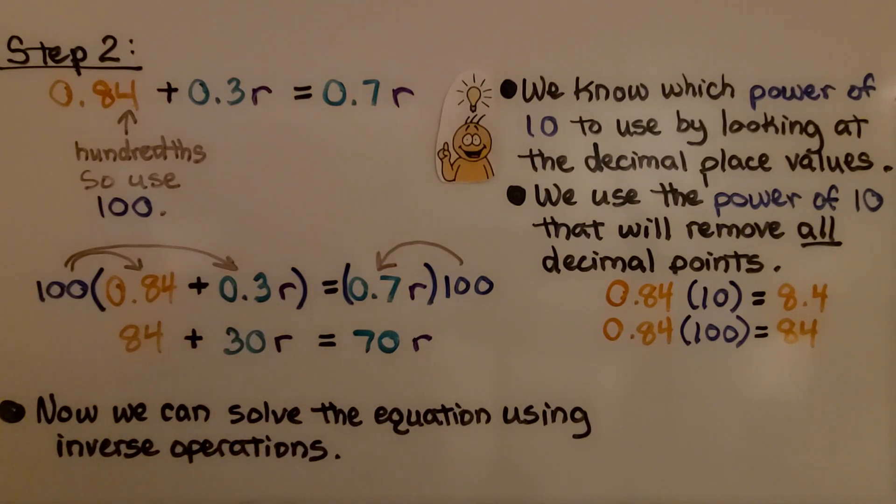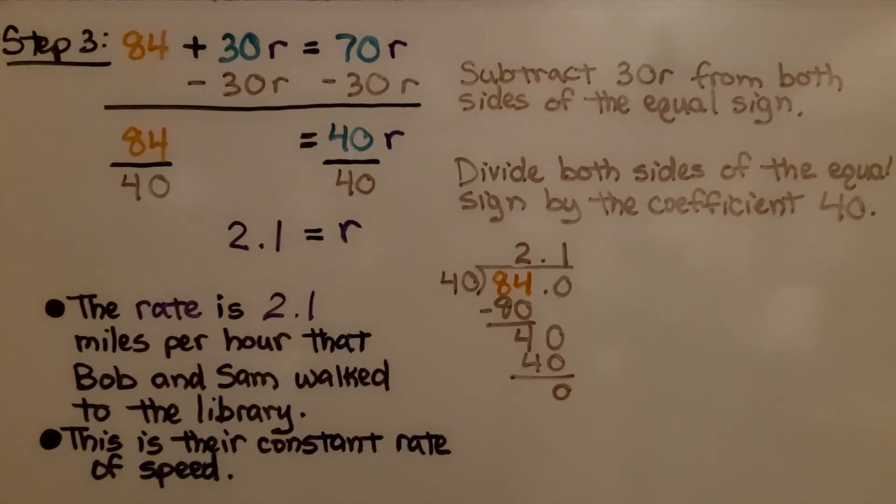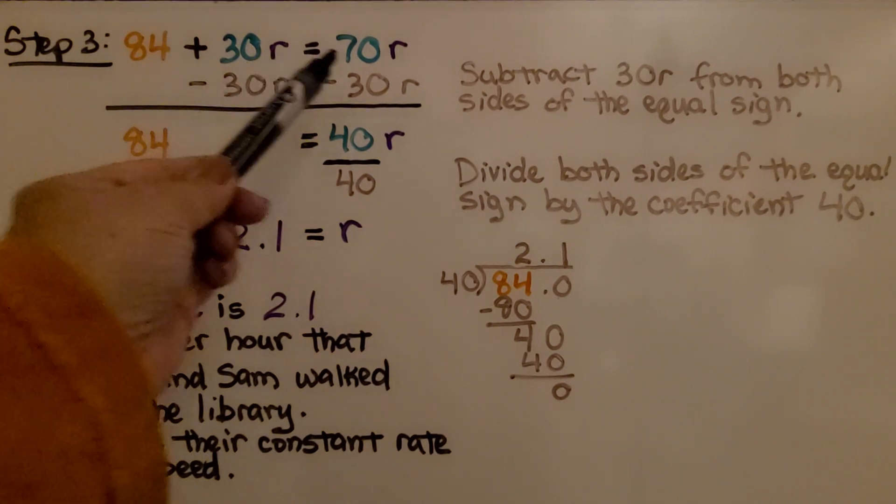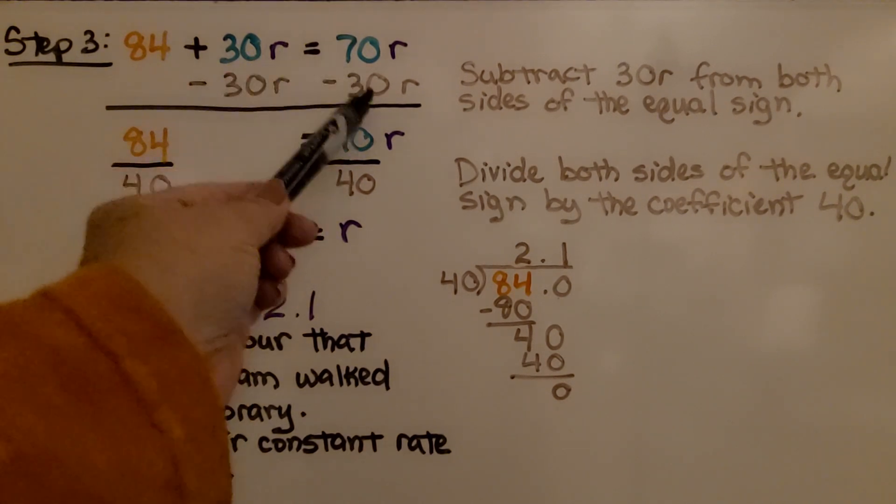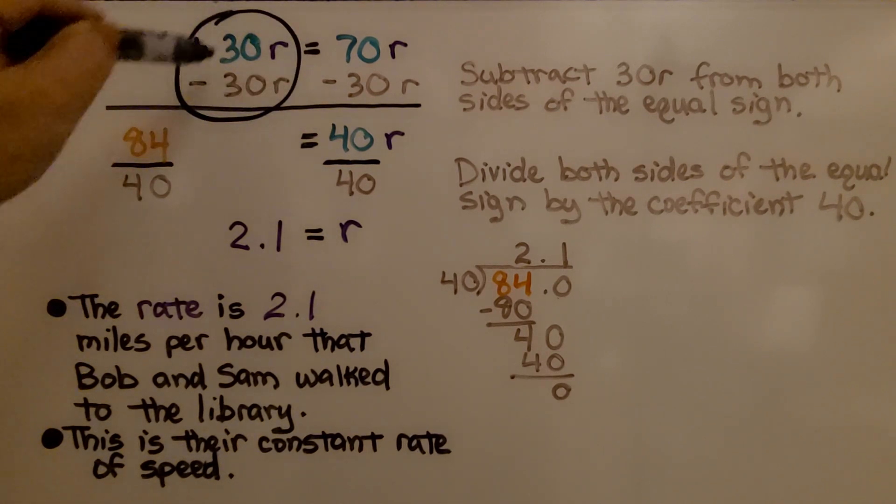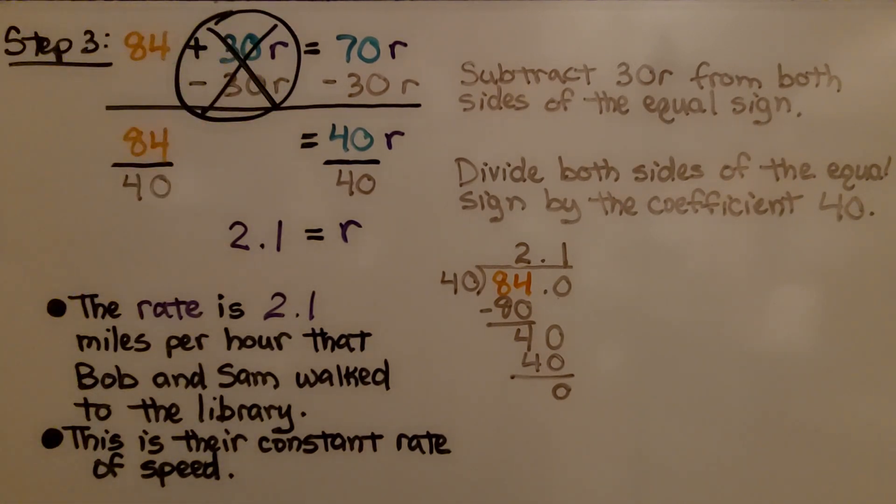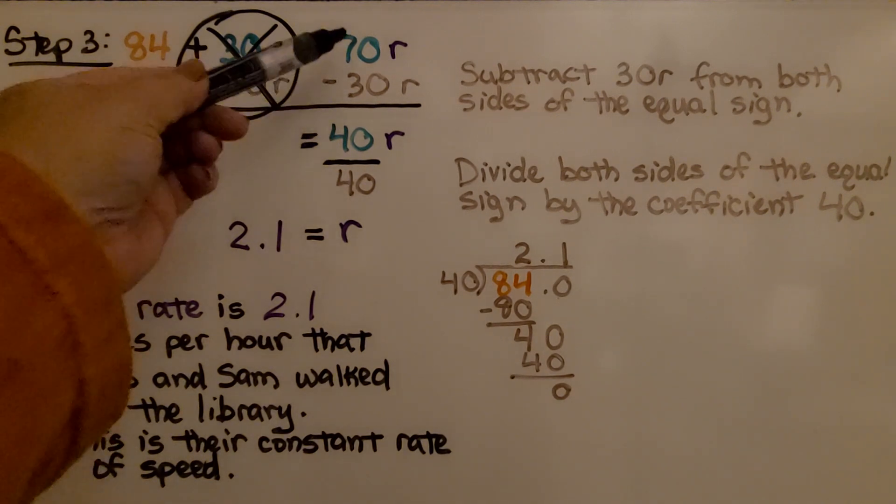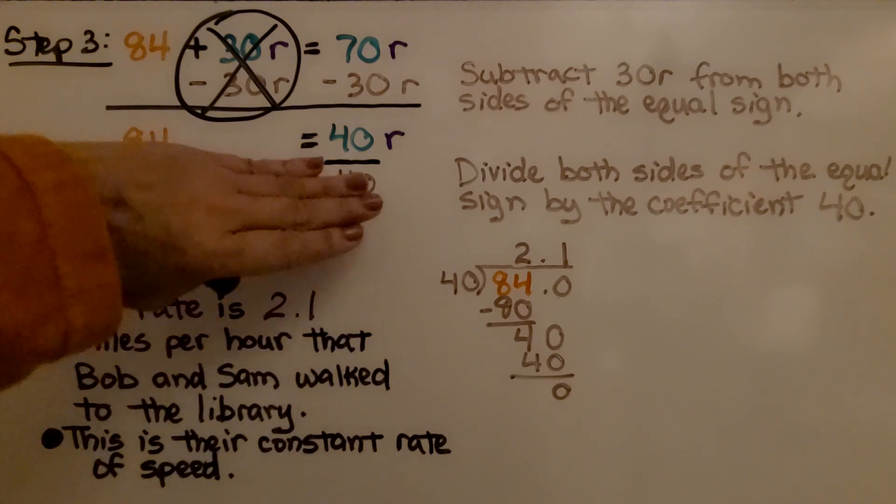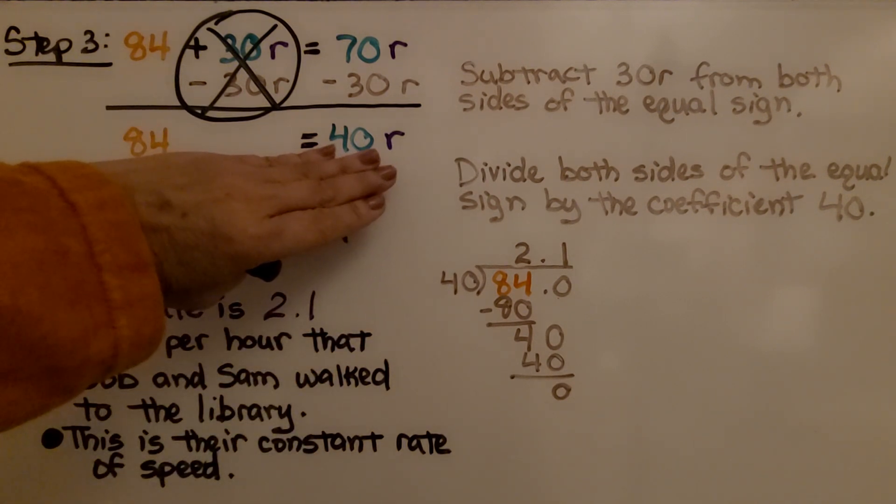Now we can solve the equation using inverse operations. Here's step three. Using the inverse operations, we can start by subtracting 30r from both sides of the equal sign. That's going to create a zero pair here. We have a plus 30r minus 30r, so that's eliminated. On this side, we have 40r. When we drop the 84 down, we have 84 equals 40r.